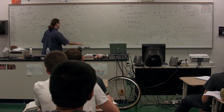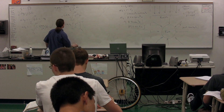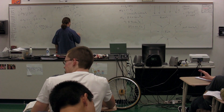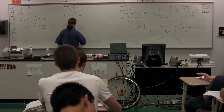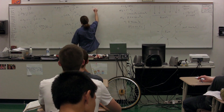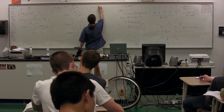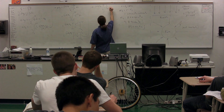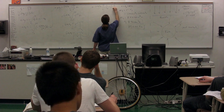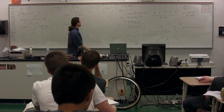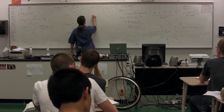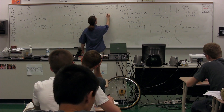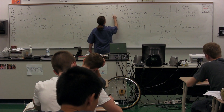So we have big G times M1 times M2 of negative 1 over R, from R initial to R final. In other words, big G times M1 times M2 multiplied by negative 1 over R final minus negative 1 over R initial. Or, the change in gravitational potential energy equals big G times M1 times M2 times the quantity 1 over R initial minus 1 over R final.